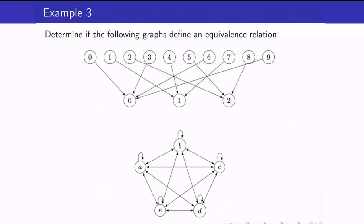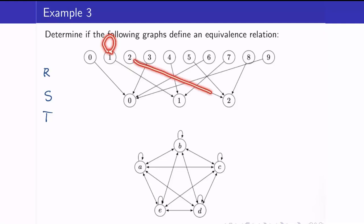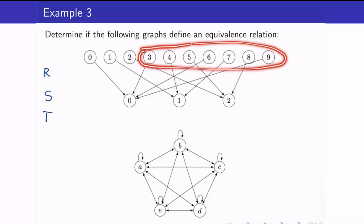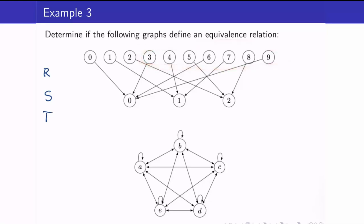Let's look at the following graphs and determine whether this is an equivalence relation. An equivalence relation has to be reflexive, symmetric, and transitive. Is it reflexive? We must be looking for loops. We have 0→0, so that's equivalent to a loop, and 1 is related to 1, and 2 is related to 2. However, we do not have a loop for the remaining vertices. Therefore, this is not reflexive.